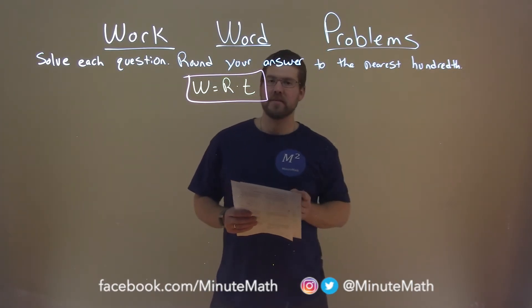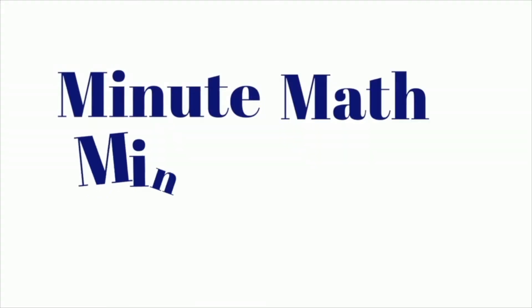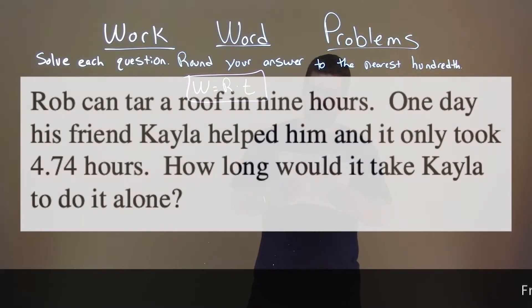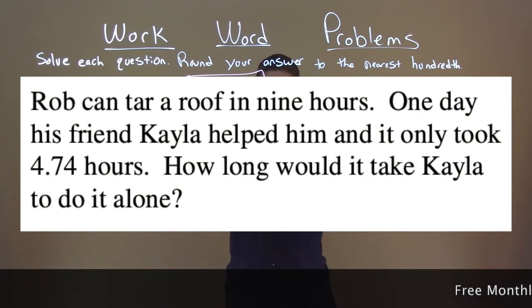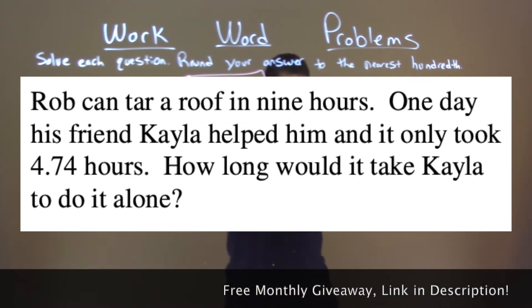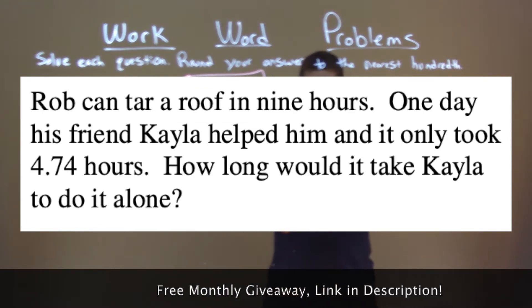If I was given this problem: Rob can tar a roof in nine hours. One day, his friend Kayla helped him and it only took 4.74 hours. How long would it take Kayla to do it alone?